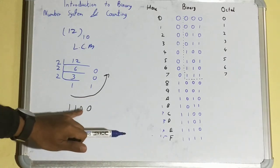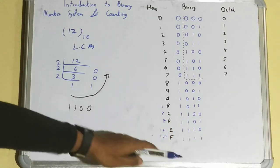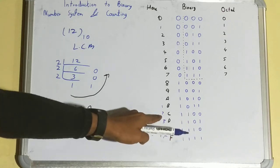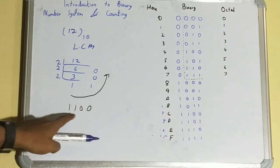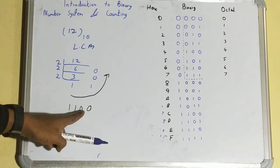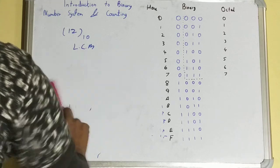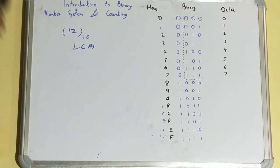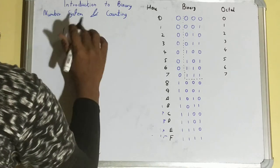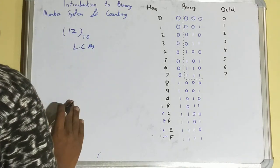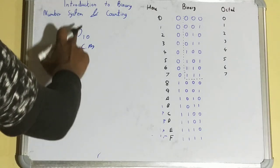To verify, you can check the table — for decimal 12, the binary equivalent shown is 1100. You can confirm this matches what we calculated using the LCM method.